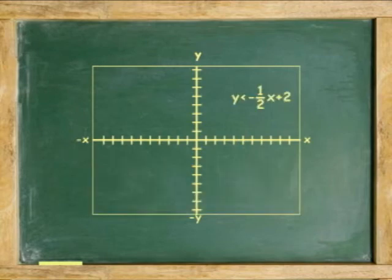Still another example: graph the inequality y is less than negative 1 half x plus 2. Because the inequality is already in slope-intercept form, we can read the y-intercept as 2 and the slope as negative 1 half.